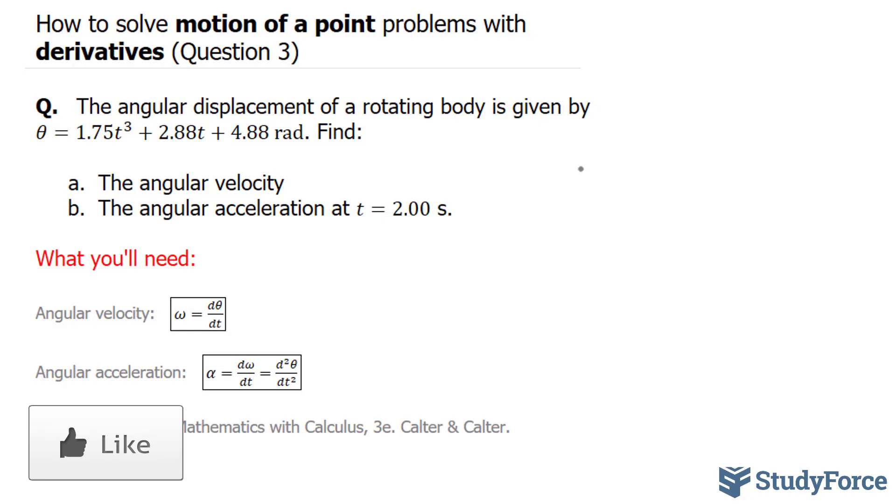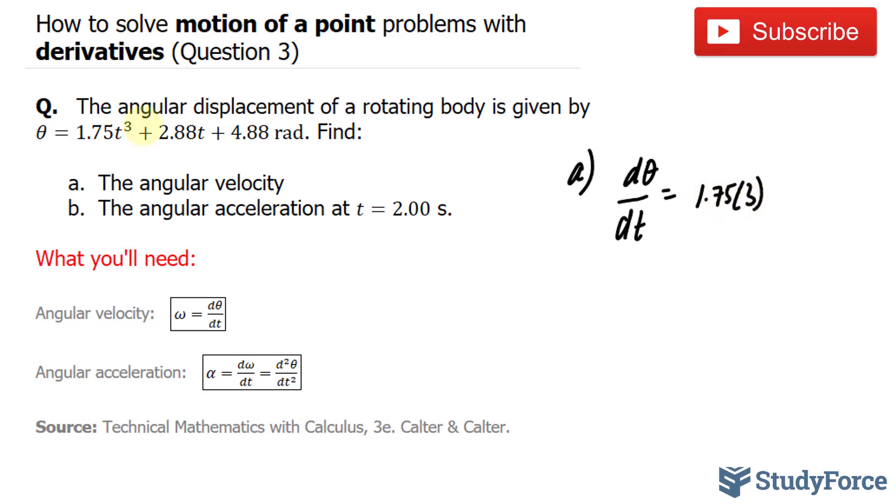So for question A, we have the derivative dθ/dt, that's with respect to t, is equal to 1.75 times 3, and this 3 becomes 1 less. So we have 1.75 times 3 times t², where we subtract 1 from that 3.